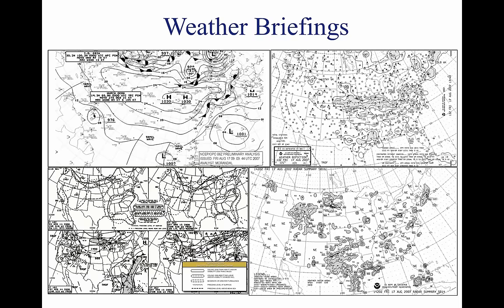3. Synopsis — an overview of the larger weather picture; fronts and major weather systems that affect the general area. 4. Current conditions — current ceilings, visibility, winds, and temperatures. 5. En-route forecast — a summary of the weather forecast for the proposed route of flight. 6. Destination forecast — a summary of the expected weather for the destination airport at the estimated time of arrival. 7. Winds and temperatures aloft — a report of winds at specific altitudes for the route of flight; temperature information provided only on request. 8. Notices to airmen — information pertinent to the route not yet published in the NOTAM publication. 9. ATC delays — any known ATC delays that may affect the flight.